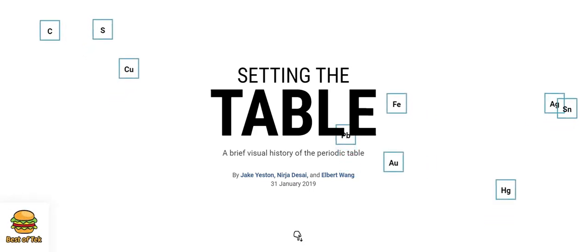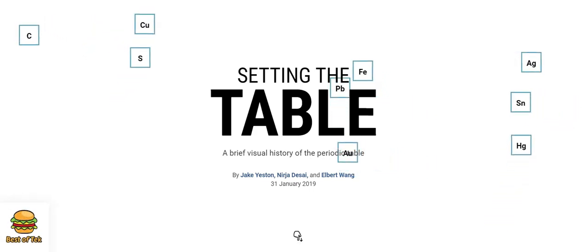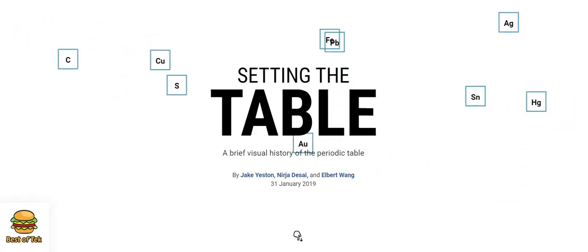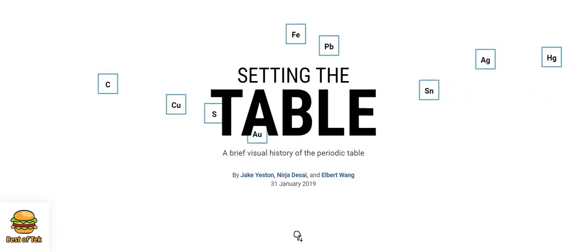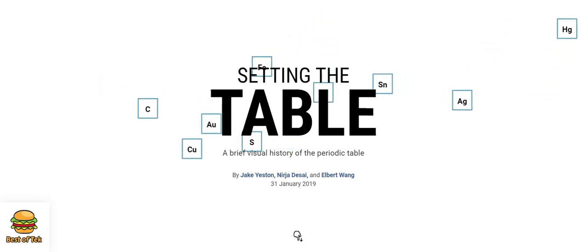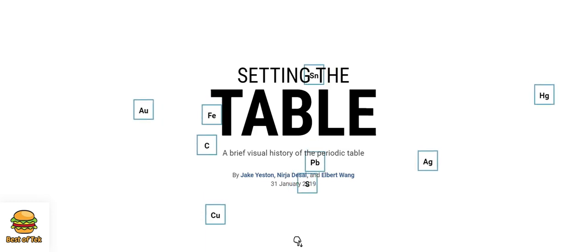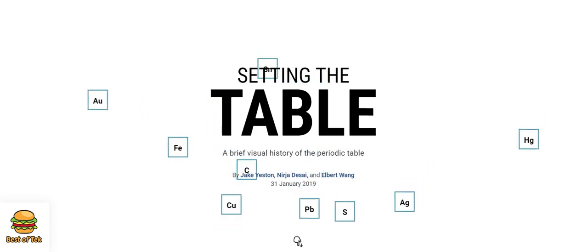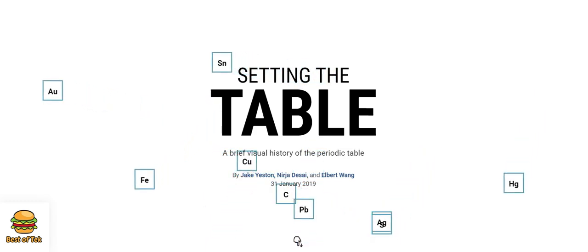Welcome to a brief visual history of the periodic table. In this video, we'll take you on a quick journey through time showing how the periodic table evolved. From ancient discoveries of elements to the brilliant minds of scientists like Mendeleev, you'll see how this chart shaped the world of chemistry.